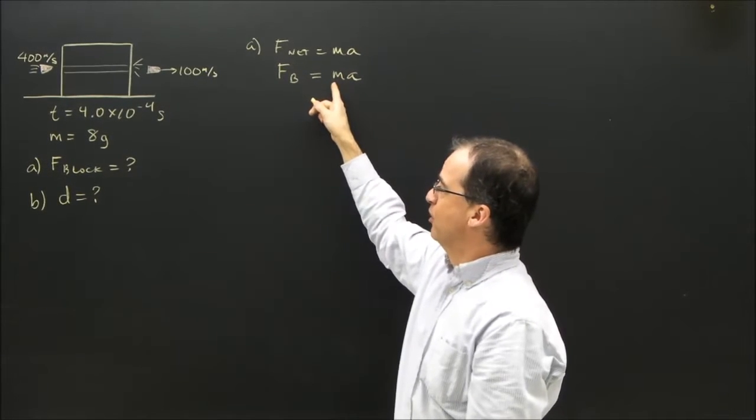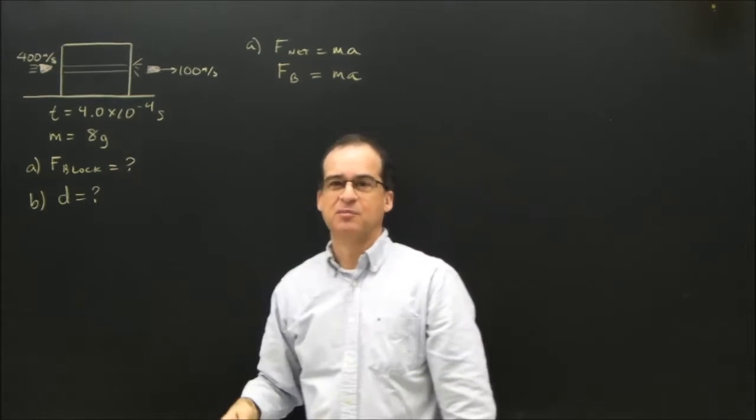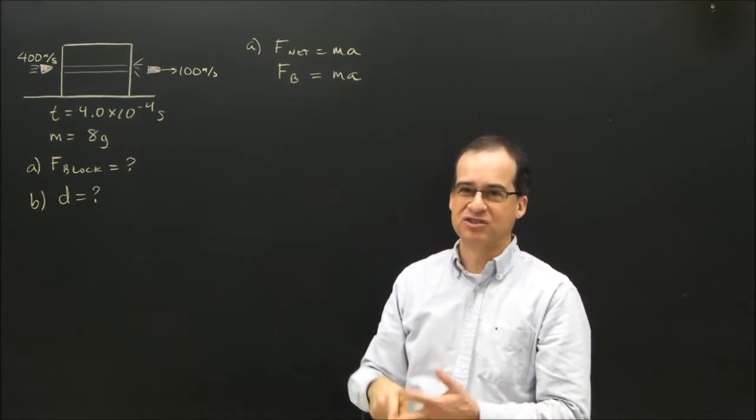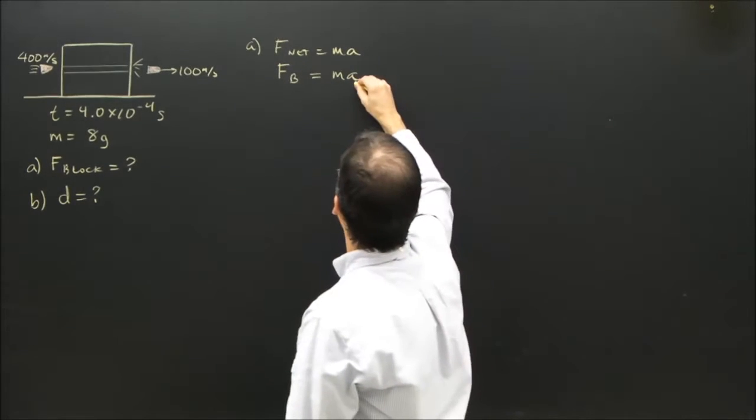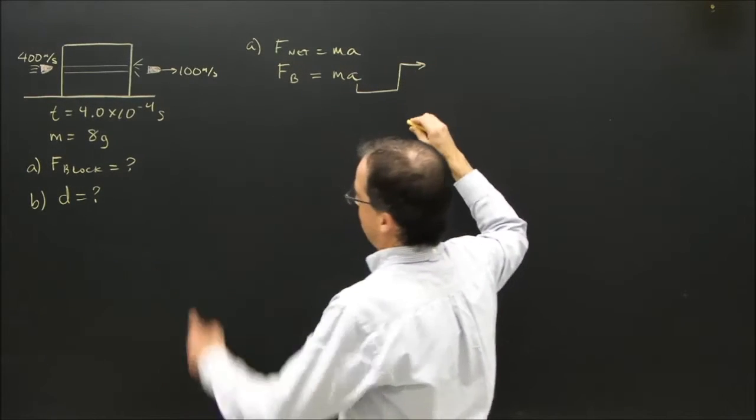So I have the mass of the bullet. I've got to change that into kilograms because we must use kilograms, meters, and seconds and meters per second. But I don't know the acceleration, so I've got to figure that out. Well, let's go over here and figure that out.